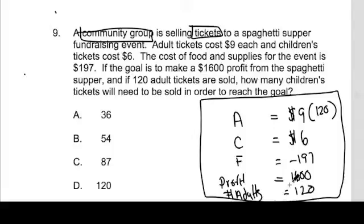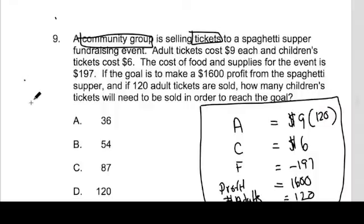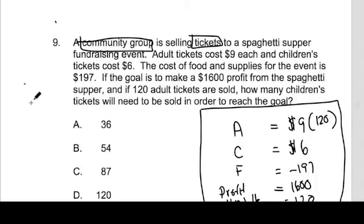Whereas if I was just doing it in my head, I'd be like: the adults are $9, the kids are — I mean $6 — the food is... and I'd get very confused. So by putting it on the page I have it laid out. Now I can go and start using basic math to solve it. I want to come up with an equation to solve for how many kids' tickets are sold.